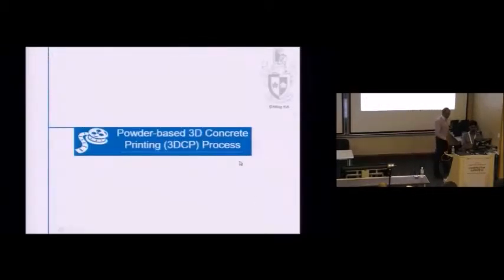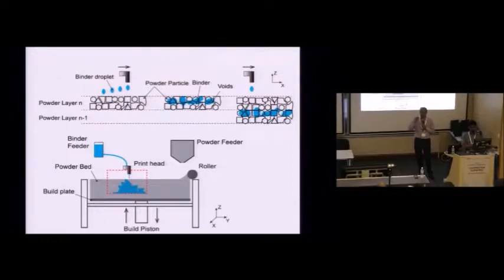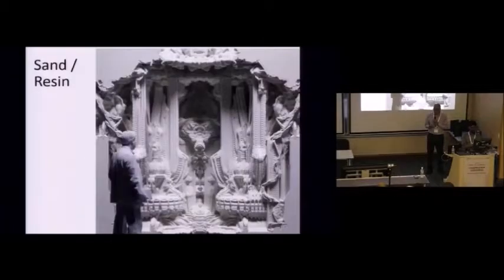So with the powder-based system, how intricate or how accurate your shape depends on the powder bed porosity, the particle shape, particle size distribution, and also the surface tension of the liquid. In this case is water. We can change the surface tension of water, which we actually do, to adjust the surface tension so it can penetrate enough and spread, but not too much. If it spreads too much, then you lose accuracy. So this is the scientific part.